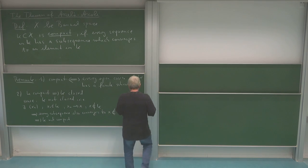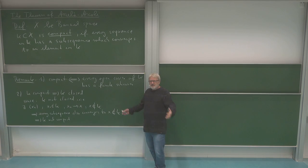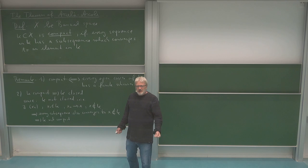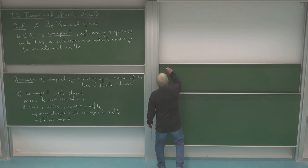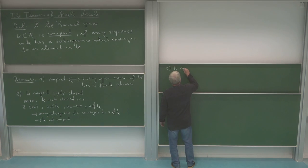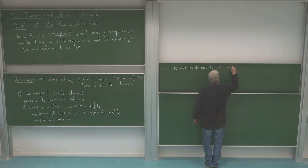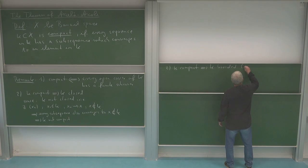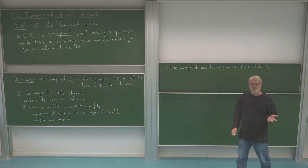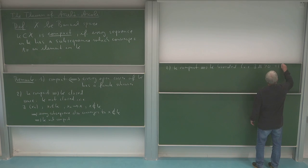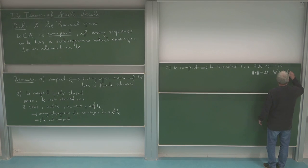Another property which compact sets must have is that they are bounded. This fits the idea that the set should be small enough to force at least a subsequence to converge. If it is unbounded, the set is just too big. So if K is compact, then it must also be bounded — there exists a constant M greater than zero such that the norm of x is less than or equal to M for all x in K.